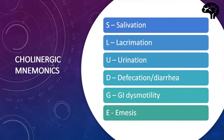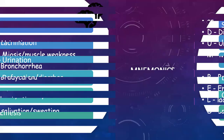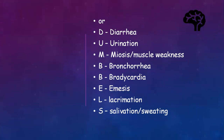We have a beautiful mnemonic for cholinergic toxidrome — SLUDGE: S for Salivation, L for Lacrimation, U for Urination, D for Defecation or Diarrhea, G for GI dysmotility, E for Emesis. We also have another mnemonic — DUMBBELLS: D for Diarrhea, U for Urination, M for Miosis or Muscle weakness, B for Bronchorrhea, B for Bradycardia, E for Emesis, L for Lacrimation, S for Salivation or Sweating.